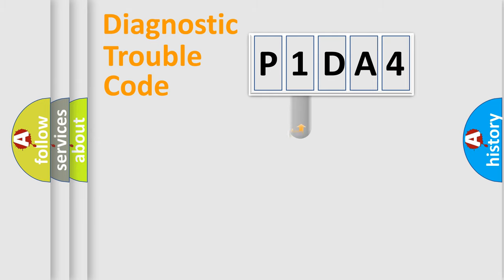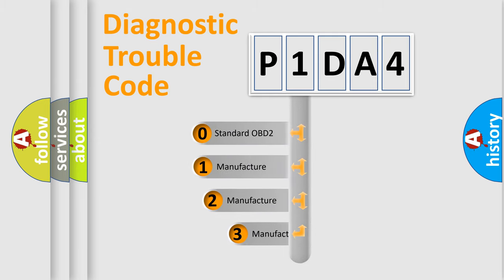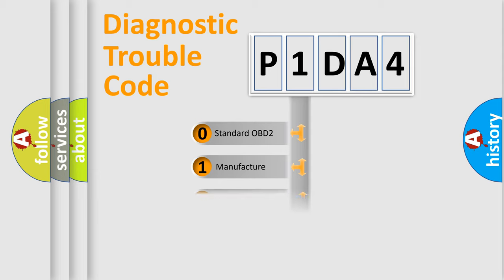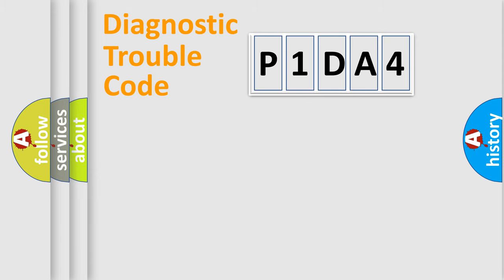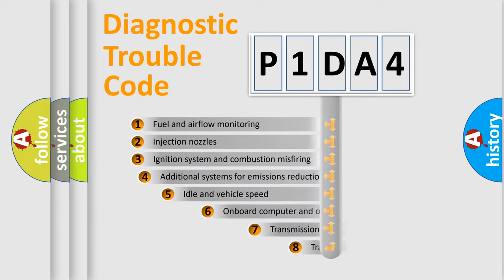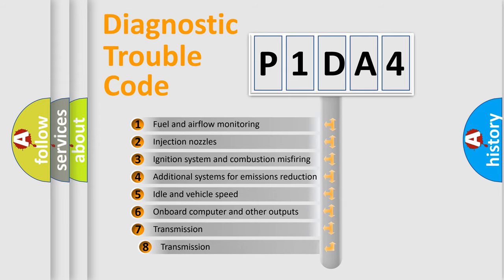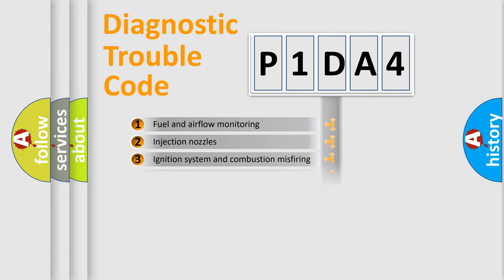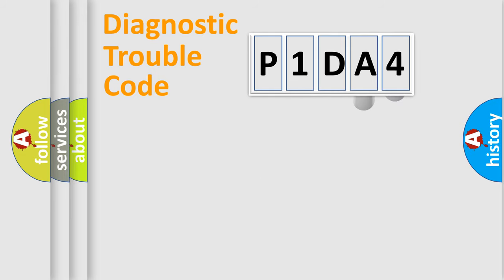This distribution is defined in the first character of the code. If the second character is expressed as zero, it is a standardized error. In the case of numbers 1, 2, or 3, it is a manufacturer-specific error. The third character specifies a subset of errors. This distribution is valid only for the standardized DTC code.